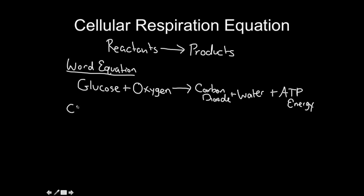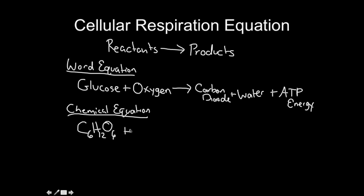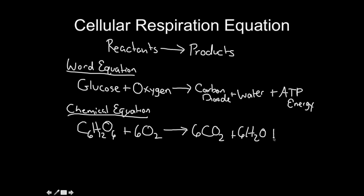Now our balanced chemical equation. We bring glucose down — remember our shortcut, C6H12O6 — plus oxygen, which is O2. Our magic number, just like in photosynthesis, is 6. Arrow indicating these are broken apart and new bonds formed. Carbon dioxide is CO2 with a magic number of 6. Water is H2O with a magic number of 6. And finally, ATP energy. That is our equation for cellular respiration.